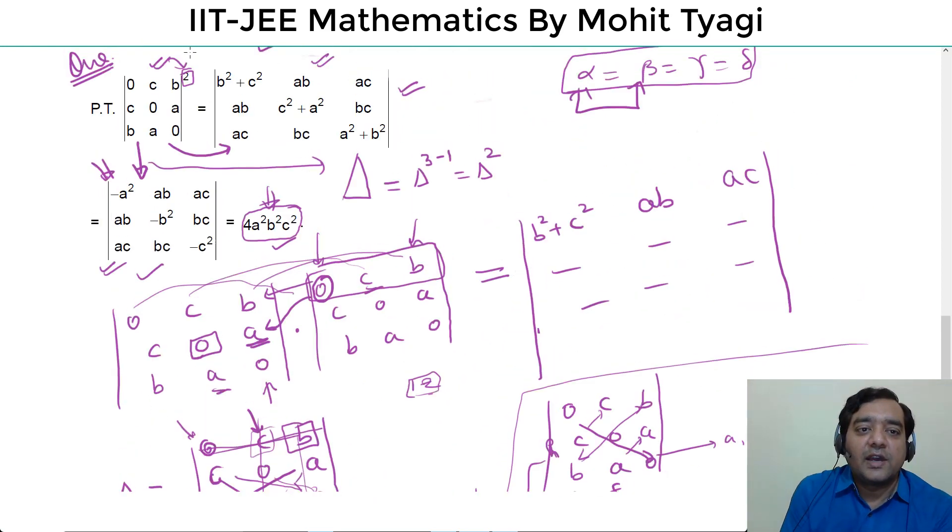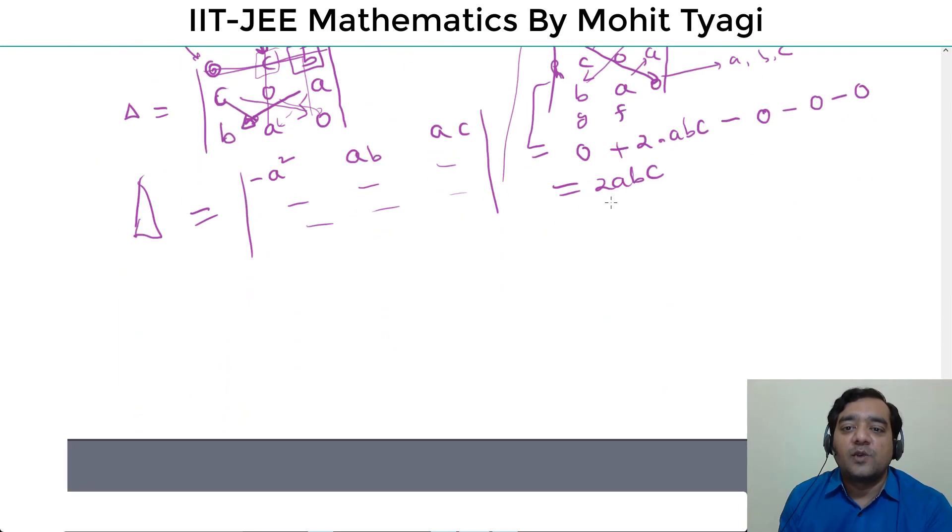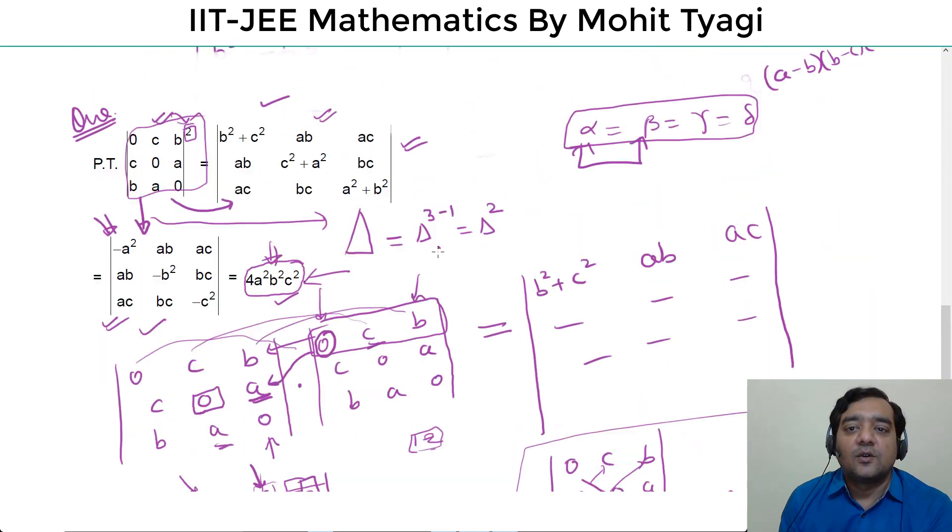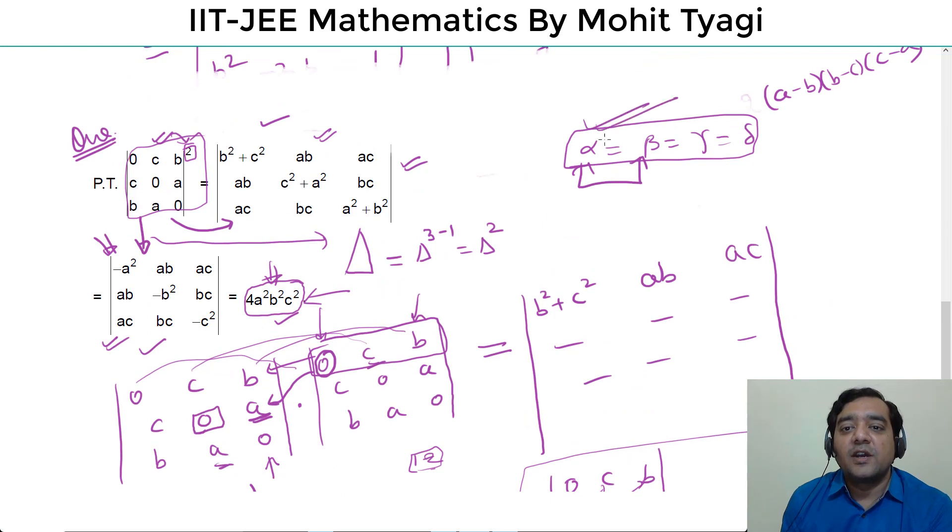Now the original question: this determinant square, 2abc squared, so 2abc squared will be 4a square b square c square. So this value is true, this value is true, this value is true. I hope this is clear.